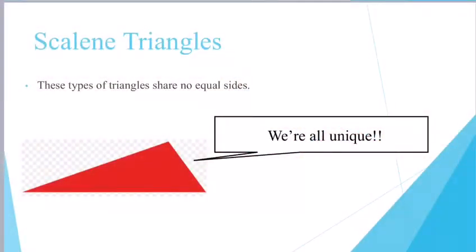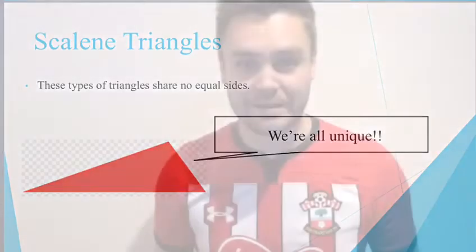The third type of triangle we'll be looking at today are scalene triangles. These triangles share no equal sides. You could almost say that every single side is unique in its own special way.